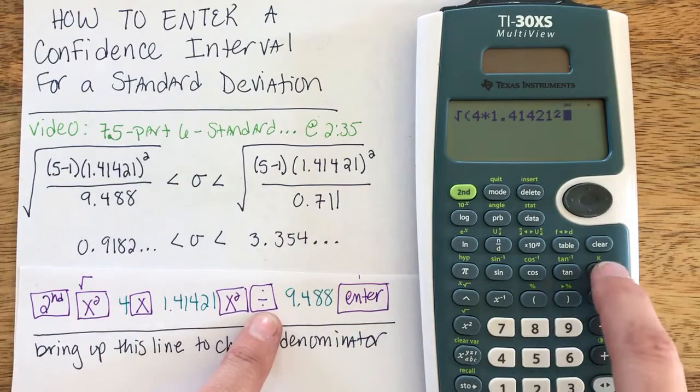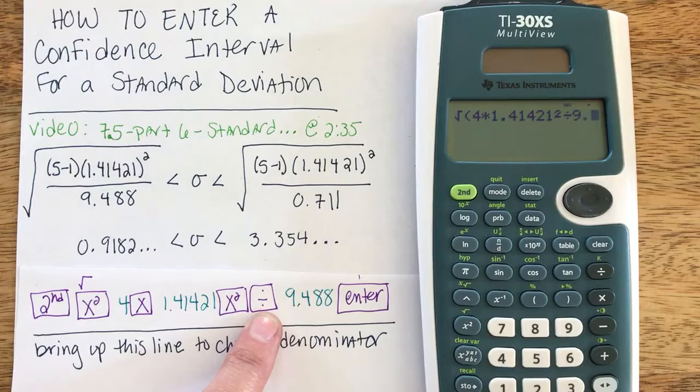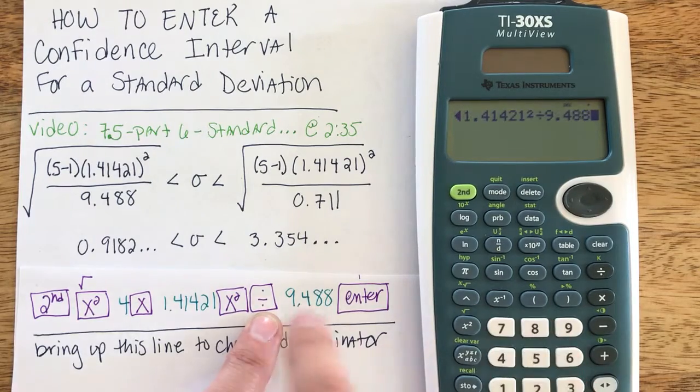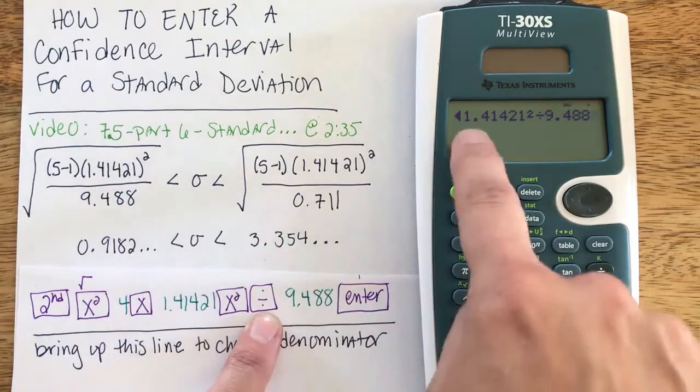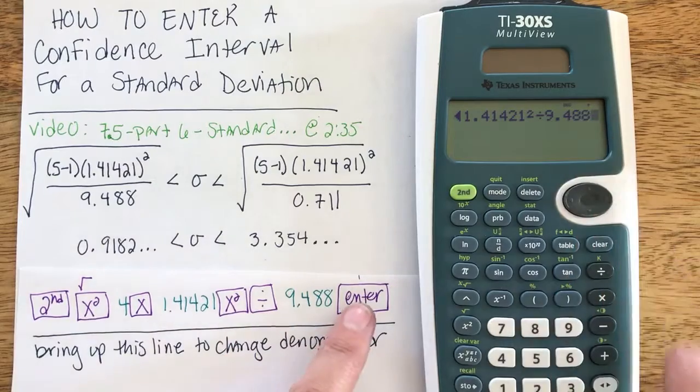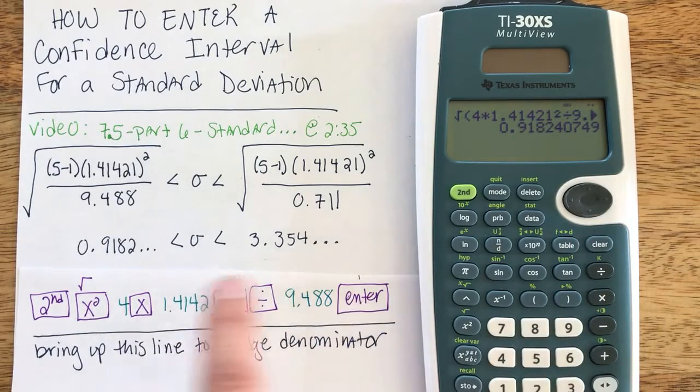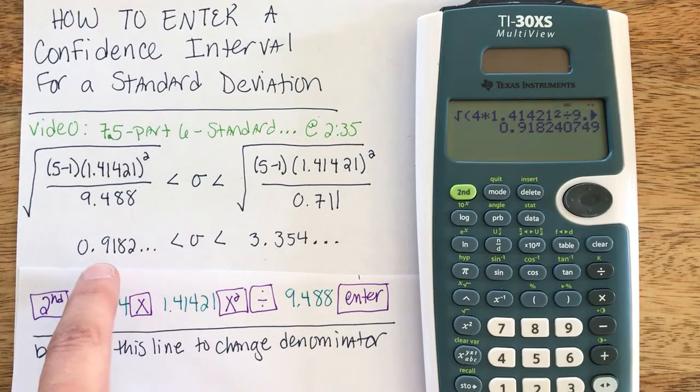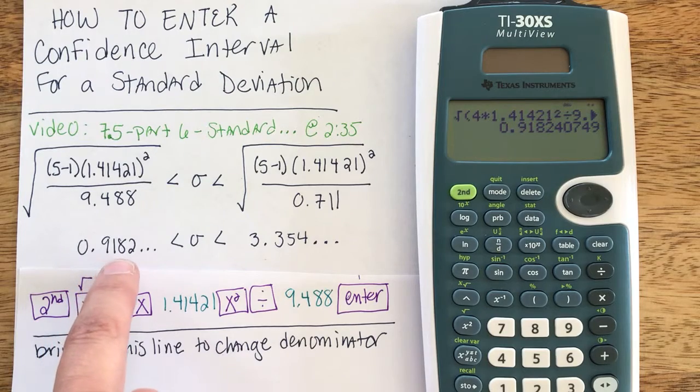Now I'm going to divide by 9.488, and no end parentheses here, and I don't really need any end parentheses here. I can just hit the enter button on my calculator, and I get my lower bound of 9.18.